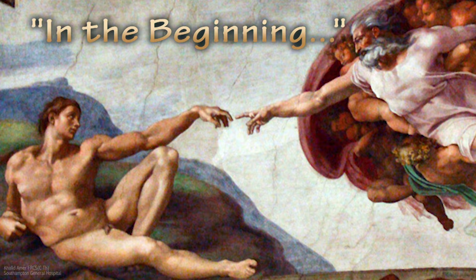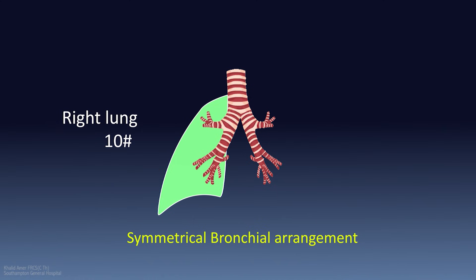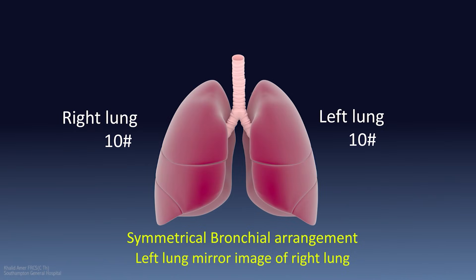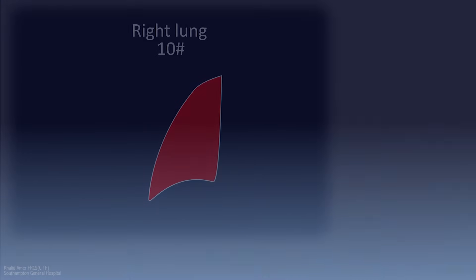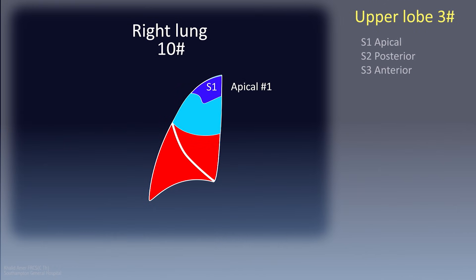In the early embryonic stages, the arrangement of bronchial segments was symmetrical — the left side was a mirror image of the right. The right side had 10 bronchial segments and 2 fissures, and so did the left. The oblique fissure equally divides segments into 5 above and 5 below it. The three segments of the upper lobe are named apical (RS1), posterior (RS2), and anterior (RS3).